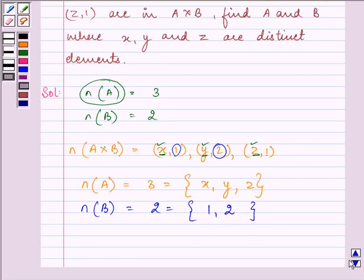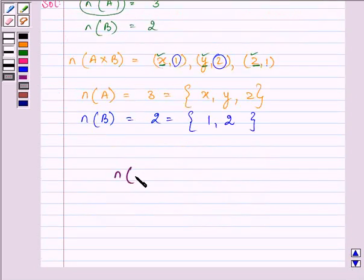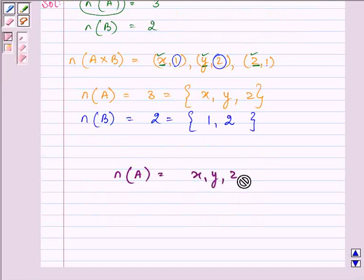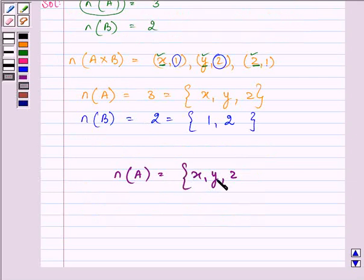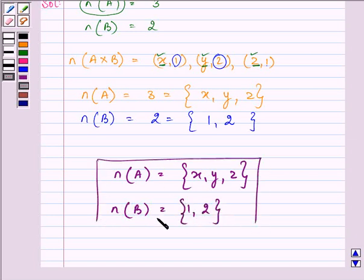So, this is our required answer. That is x, y, z are the elements in set A and elements in set B are 1, 2. I hope you enjoyed the session. Take care.